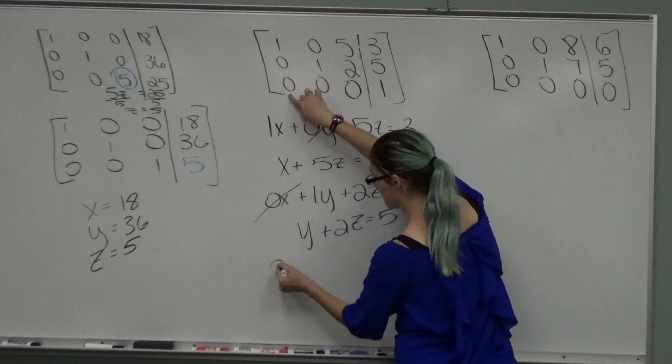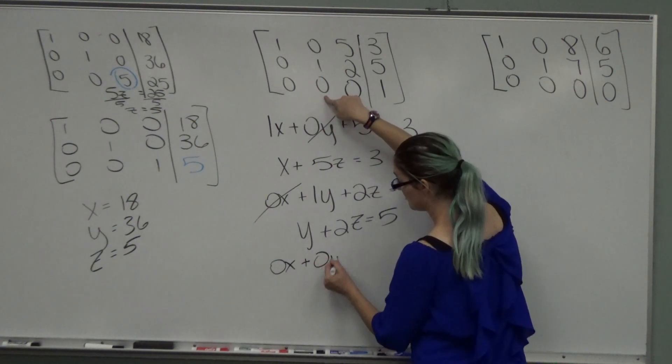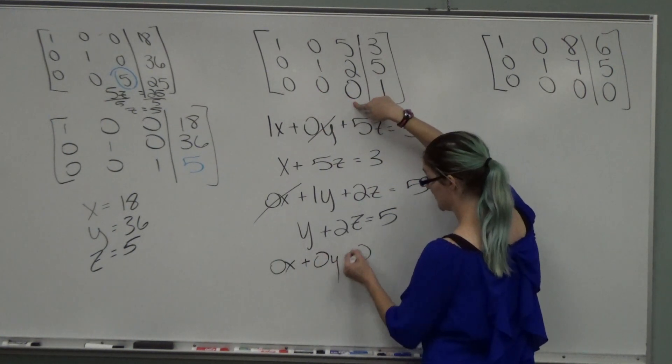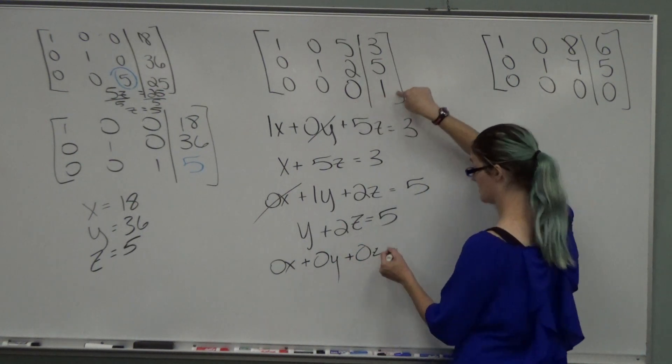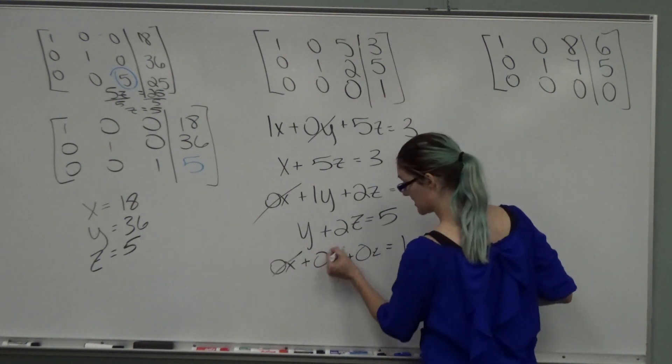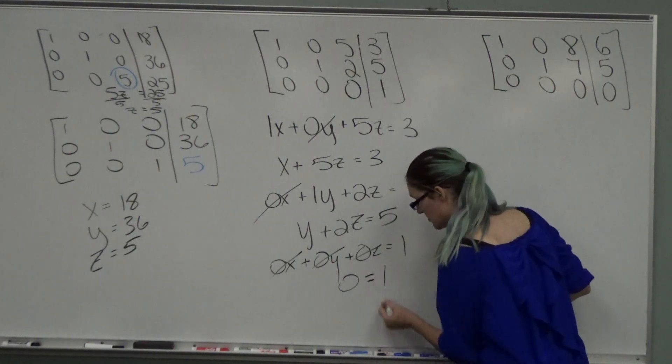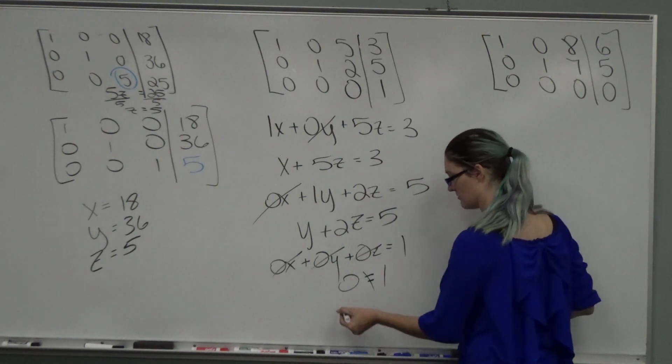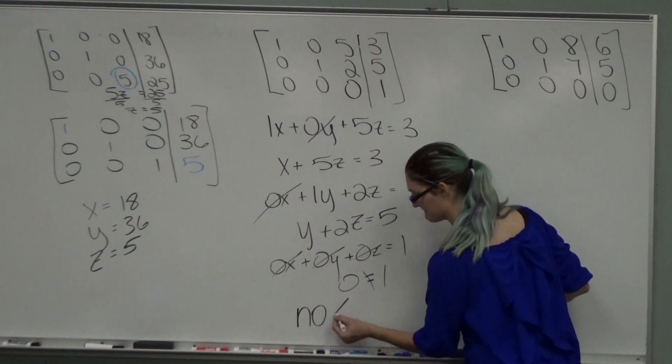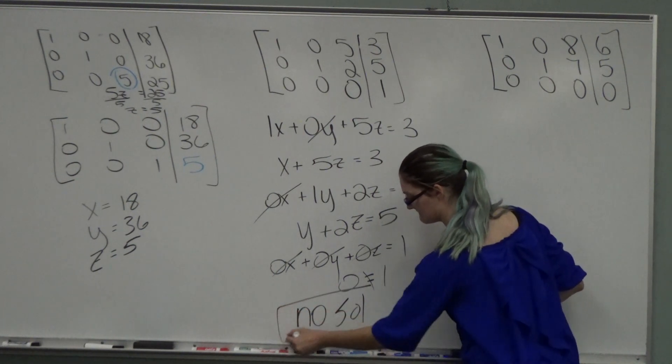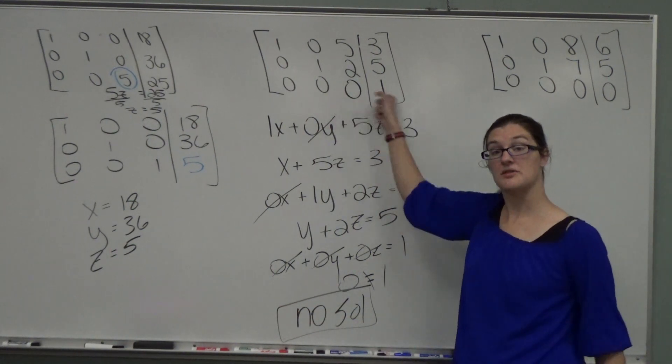Down here, I have 0x plus 0y plus 0z equals 1. Well, 0x, 0y, 0z, that's all 0. Does 0 equal 1? No. That one has no solution. 0 cannot equal 1.